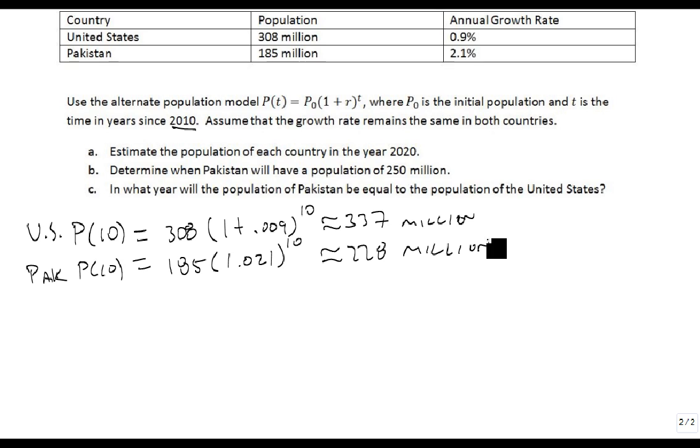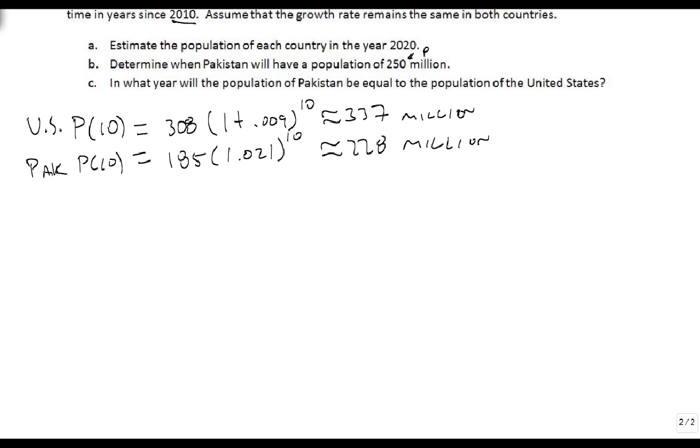So the next question we ask ourselves is, now that we know this, why don't we determine when Pakistan will have a population of 250 million? They're not quite there in 2020, but we're going to replace - this is now our P, and we want to know what the t is. So we let 250 equal 185 times 1.021 raised to the t. Divide by 185, so 250 over 185 equals 1.021 to the t.